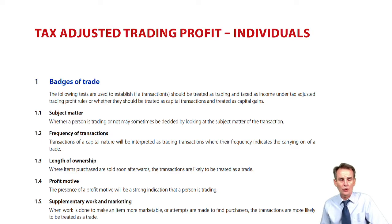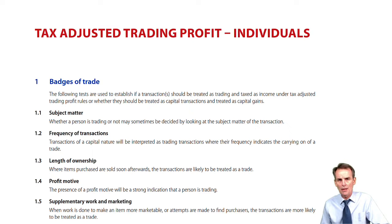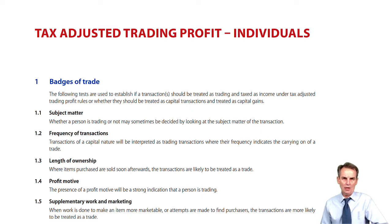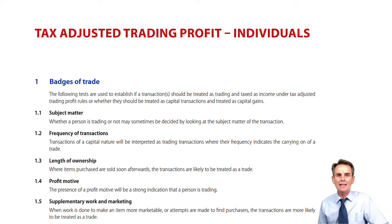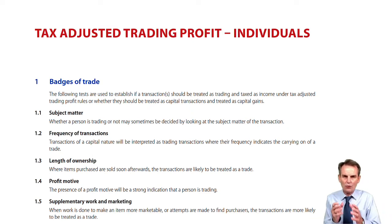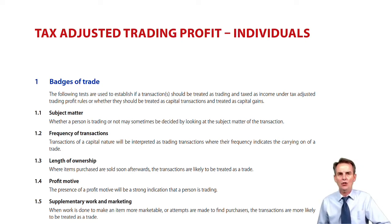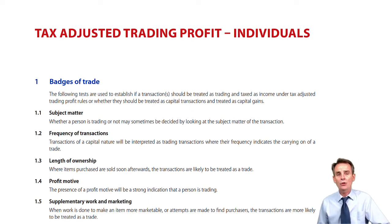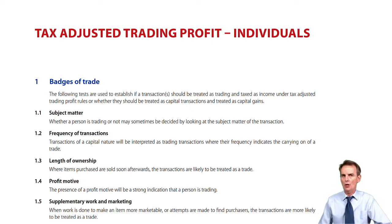Back in chapter two, we saw that the two main sources of earned income for taxpayers are either employment income or, for the self-employed, the trading profits of their unincorporated trades. What we're now going to look at is the detail pertaining to establishing what that trading income assessment will be — what figure of trading profit will we include on the income tax computation for the relevant tax year. This exercise is going to cover an awful lot of ground, from chapter four through to chapter eight.